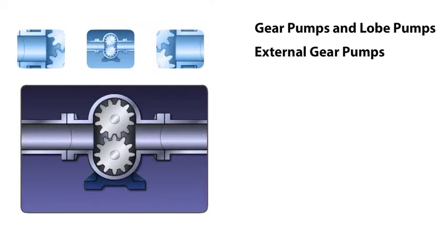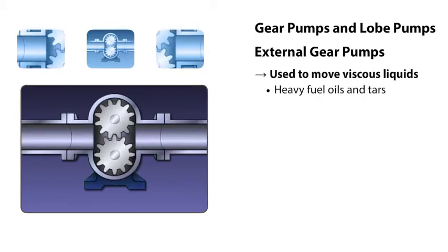Many rotary pumps use gears or lobes to move process liquid. Like other rotary pumps, gear pumps and lobe pumps can be used to move viscous liquids such as heavy fuel oils and tars.